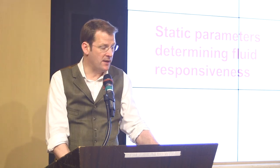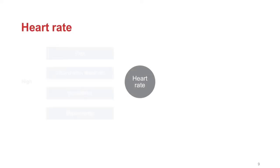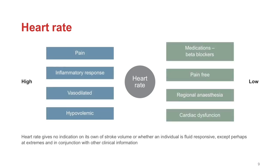The most commonly used static parameters to trigger fluid administration in the US and Europe are heart rate, mean arterial pressure, CVP, and urine output. However, there are many reasons why these may not be the best parameters to guide fluid therapy. Heart rate may give an indication of cardiac output and fluid responsiveness at extremes, but in day-to-day practice it has limited use. Patients may be on medications like beta blockers that alter heart rate, and it can be affected by both inflammatory and neuroendocrine responses. The sympathetic response can be attenuated by regional anaesthetic, and tachycardia could be due to hyperdynamic circulation from sepsis or hypovolemia, or a sympathetic response following surgery — meaning the need for fluid cannot be ascertained from heart rate alone.